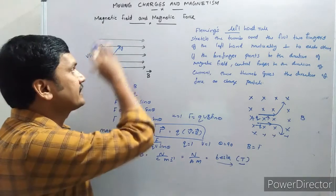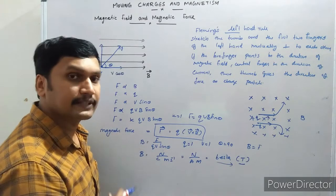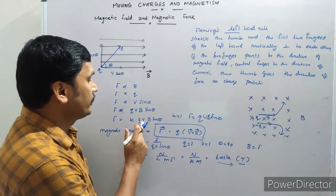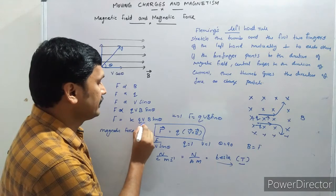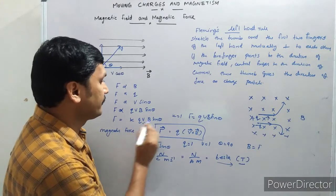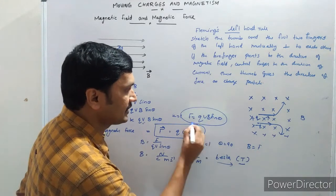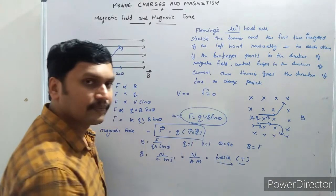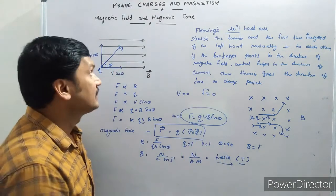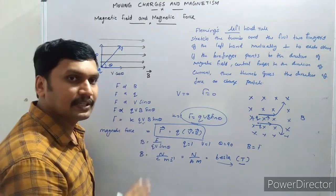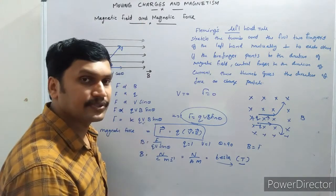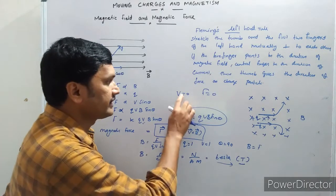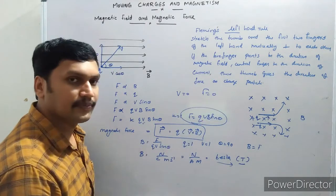If the charge is at rest, it will not experience any force. In the equation F = QVB sine theta, if V = 0 then F = 0. So a stationary charge experiences no magnetic force; only a moving charge experiences a force in a magnetic field.